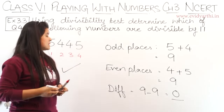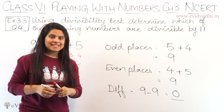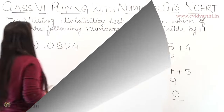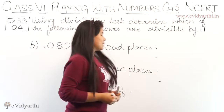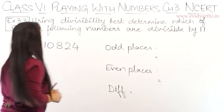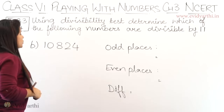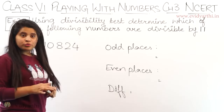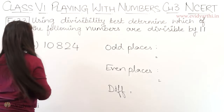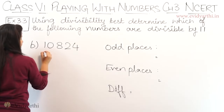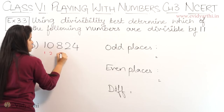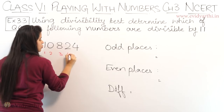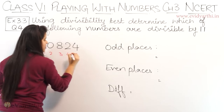So, this was the A part. Now let's come to the B part. The B part has the number 10824. So, let's write the positions first: 1, 2, 3, 4, 5.